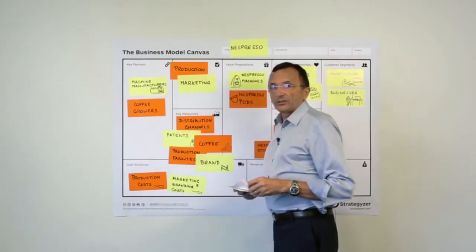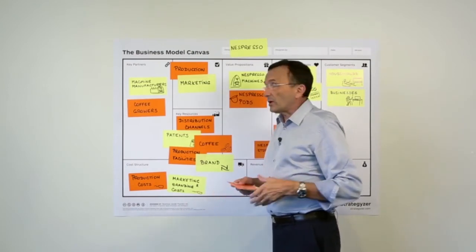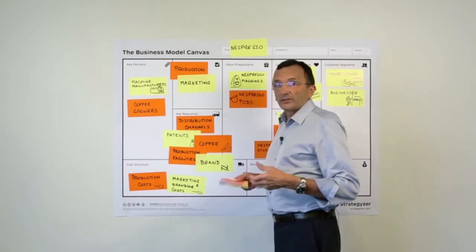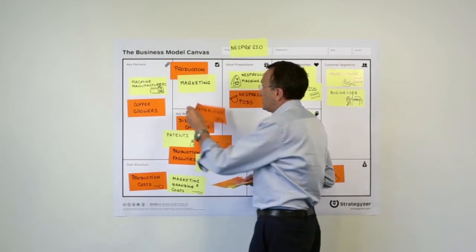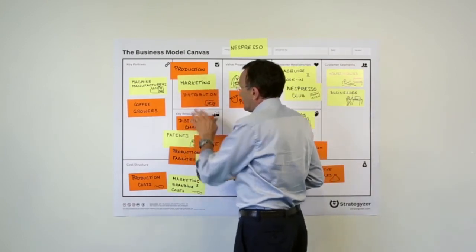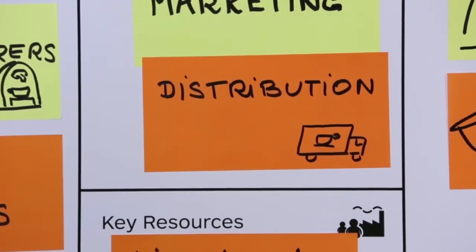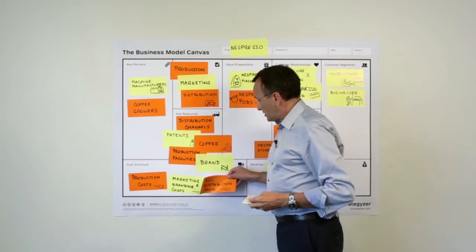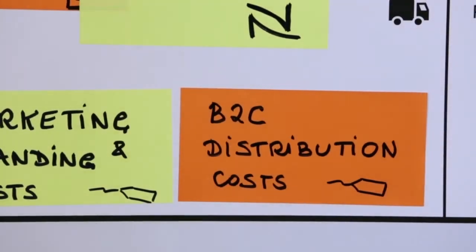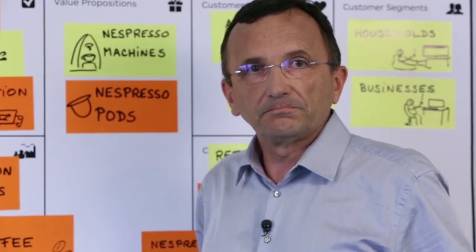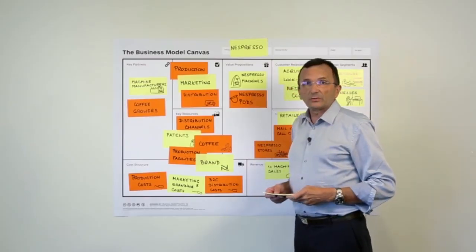And the last activity is the distribution or the logistics, because you have to reach those customers with this direct distribution. So it means that you have the trade activity, which is the distribution activity, which has a cost related to this logistics activity. This is the business model of Nespresso.